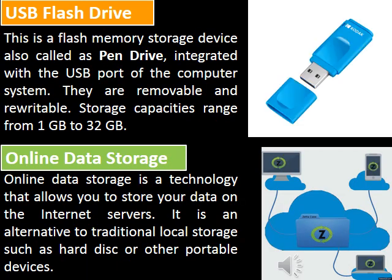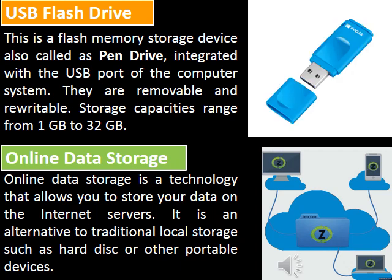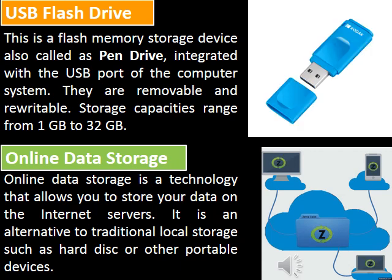The fourth storage device is the USB flash drive. This is a flash memory storage device, also called a pen drive, integrated with the USB port of the computer system. They are removable and rewritable. Storage capacities range from 1 GB to 32 GB. The fifth is online data storage. Online data storage is a technology that allows you to store your data on internet servers, as an alternative to traditional local storage such as hard disk or other portable devices.